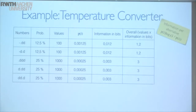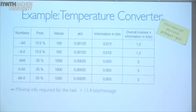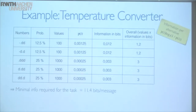We do this for all of these variants and end up with the information contents of the various alternatives. Adding that up, and doing this more detailed analysis — which shows that some variants have higher information content than others — we find that the information the task requires is actually 11.4 bits per message.